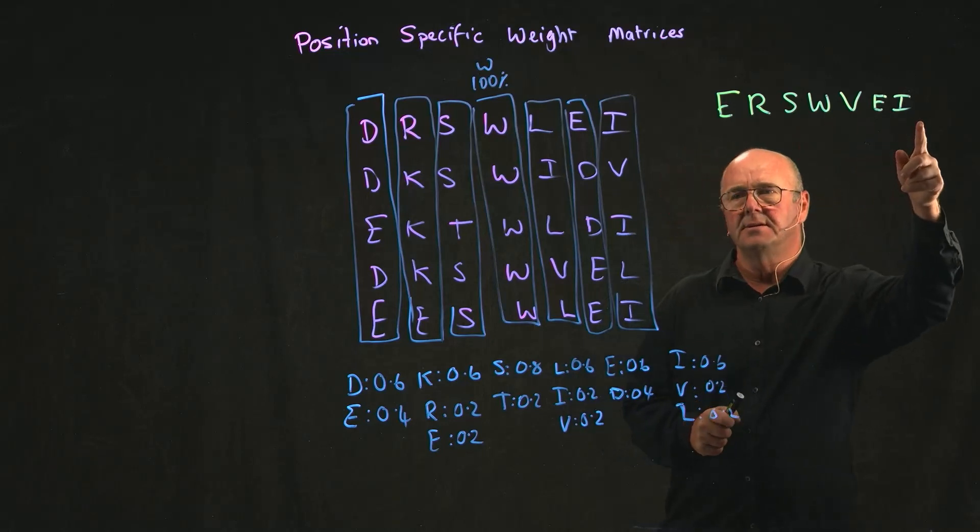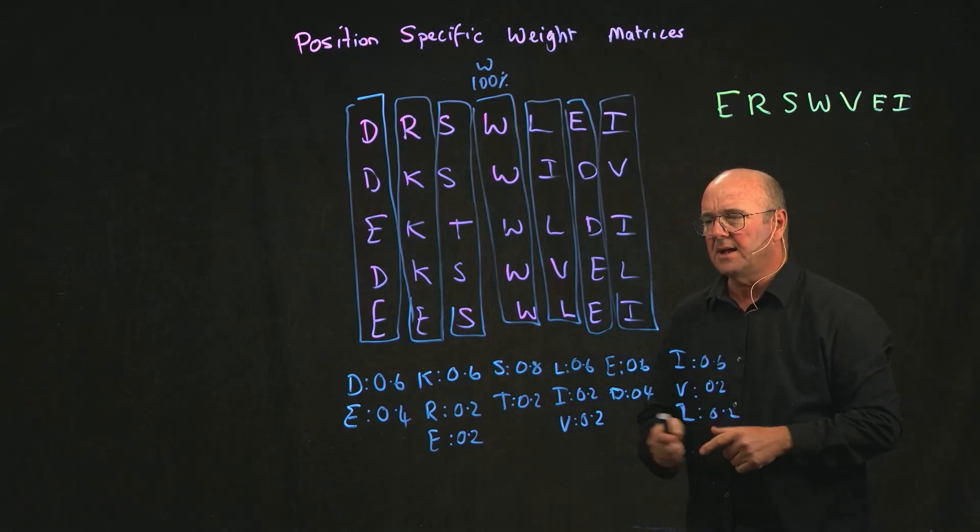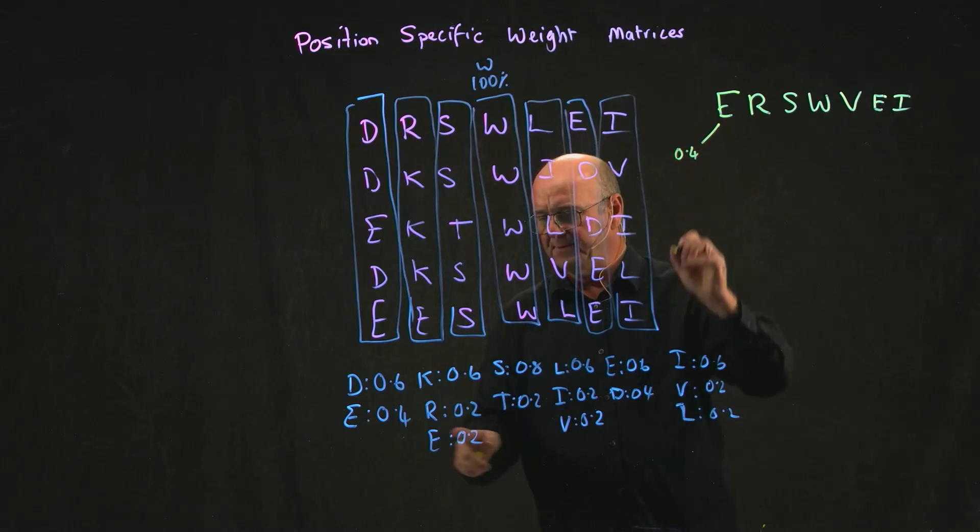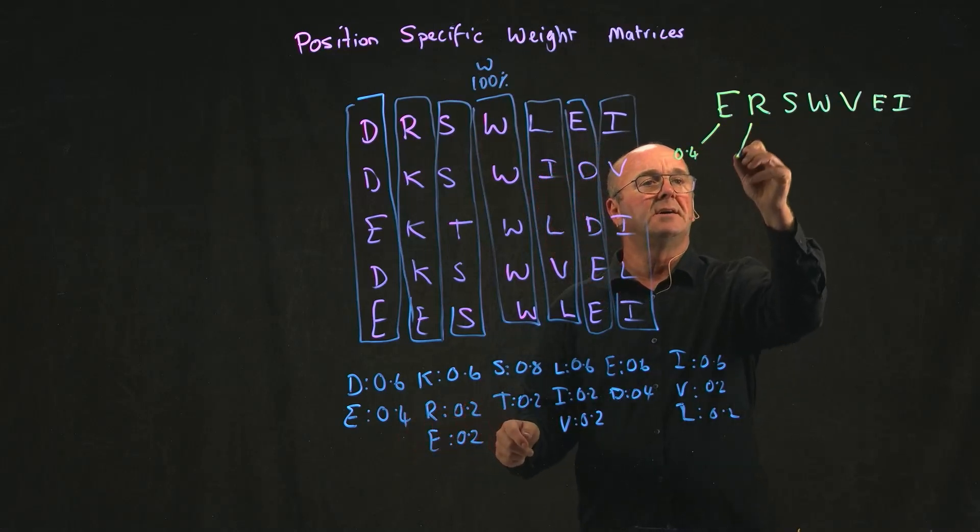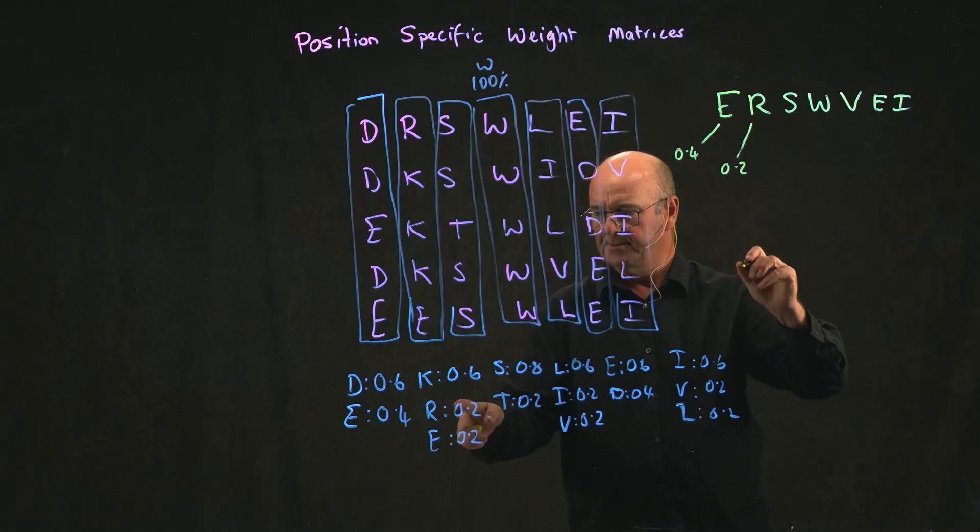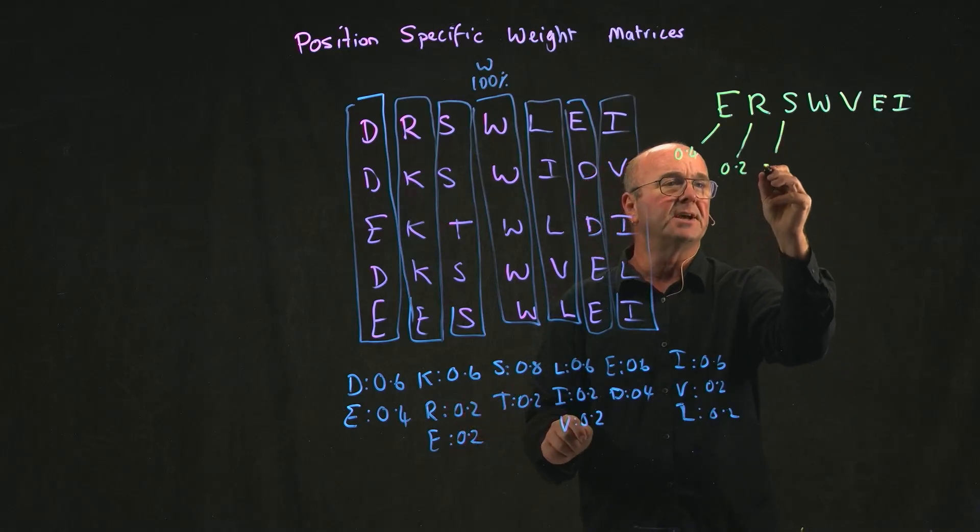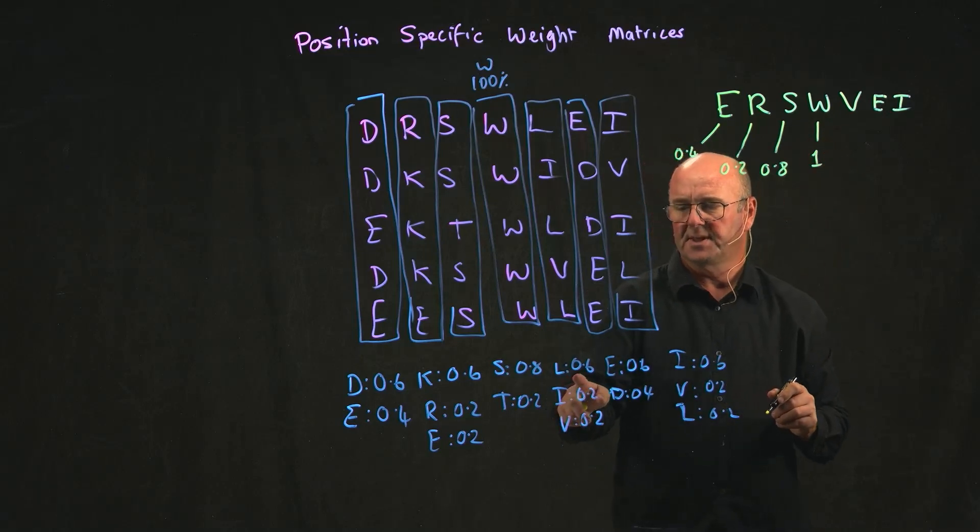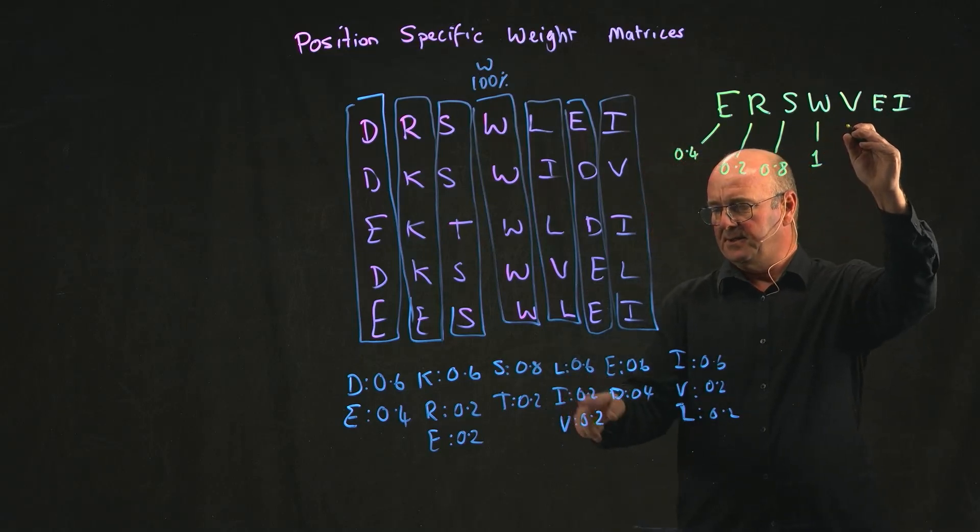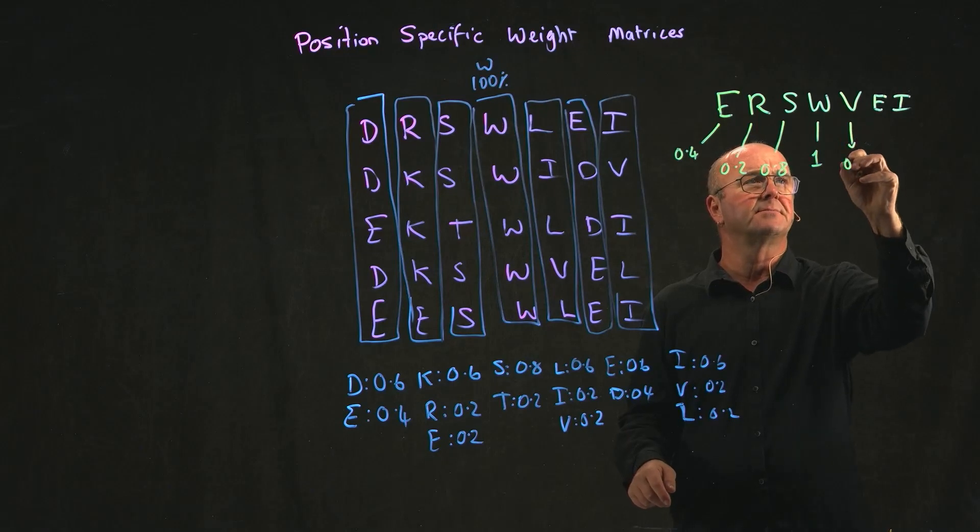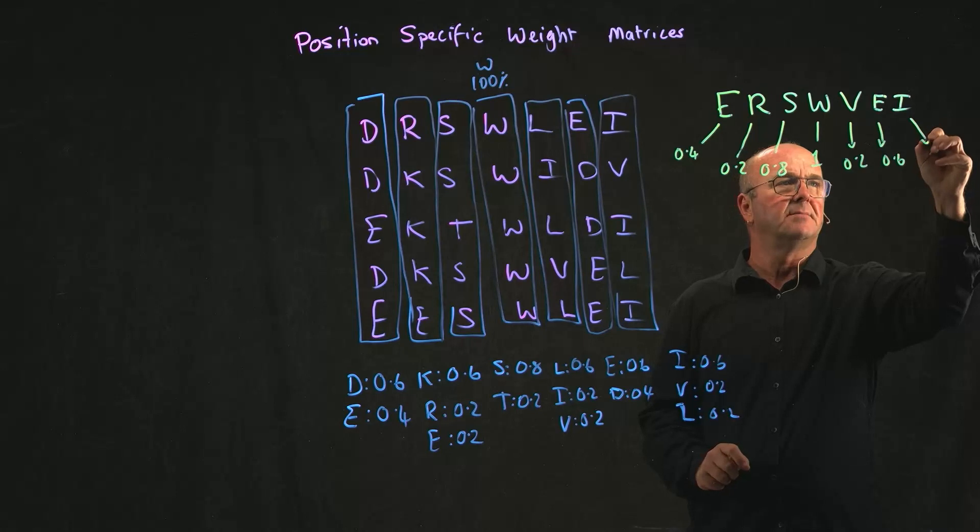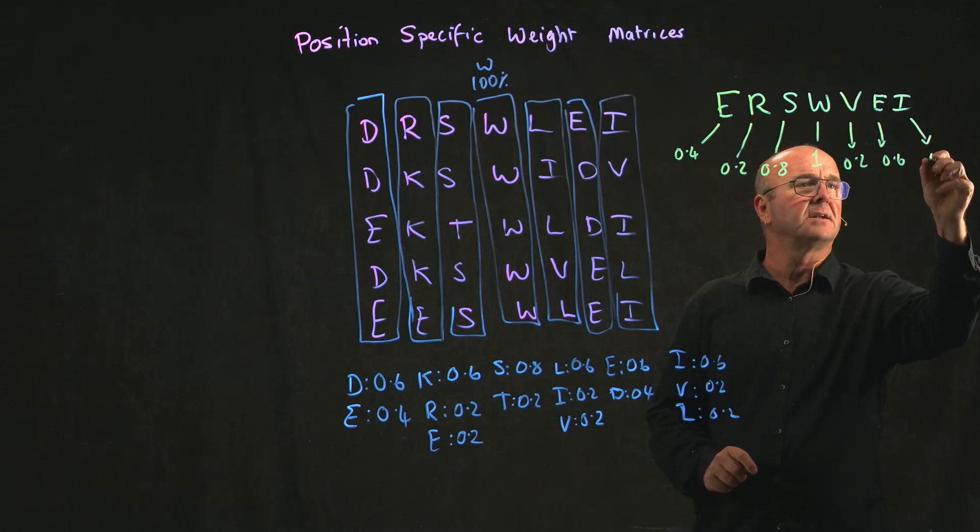At each position, I can calculate what my score would be. So my E will give me 0.4, my R will give me 0.2, my S will give me 0.8, my W gives me a 1, my V gives me a 0.2, my E gives me a 0.6, and my I gives me another 0.6.